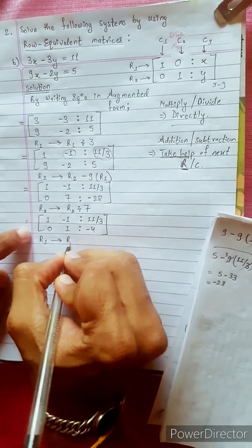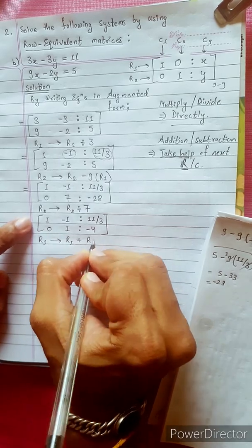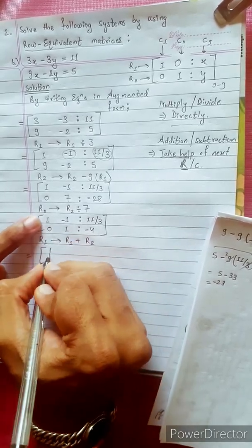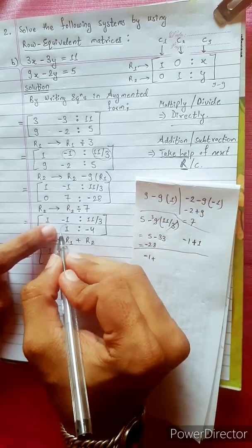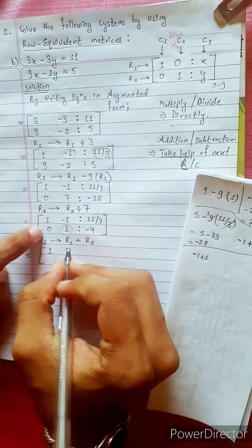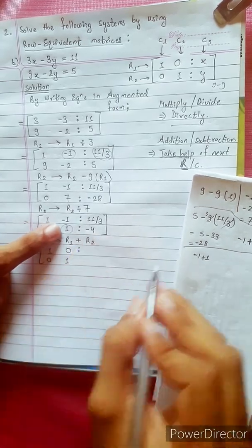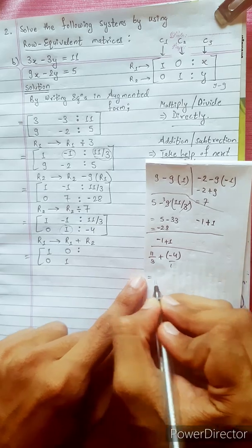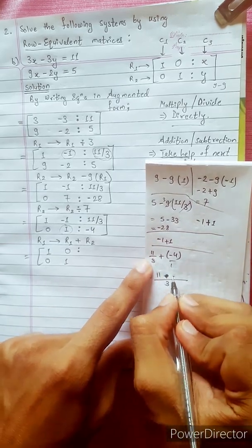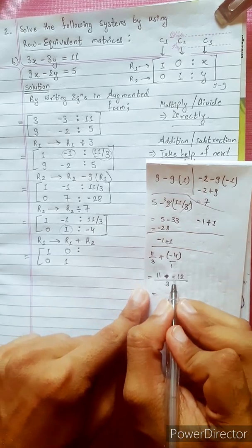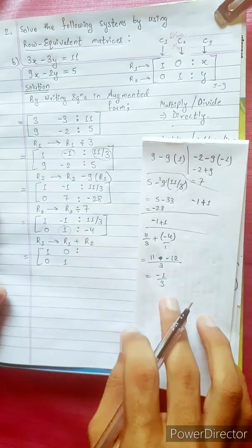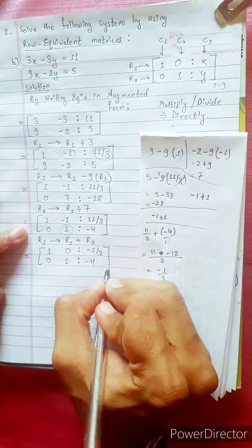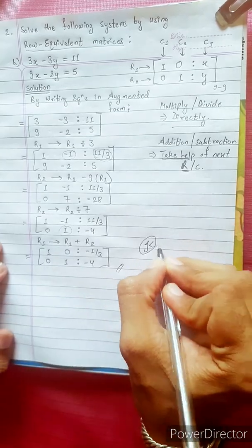R1 changes into R1 plus R2. R1: 1 plus 0 is 1, minus 1 plus 1 is 0. Then 11 by 3 minus 1 by 3 minus 1 by 3 minus 4. The final answer gives x and y values. Thank you.